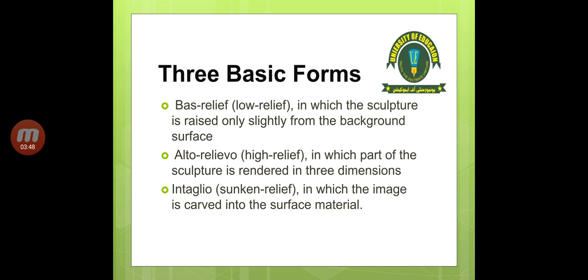Basically, the three basic forms of sculpture are bas-relief, alto-relief, and intaglio. Bas-relief is where the sculpture slightly rises from the background surface — it is attached to the background surface but rises a little. Alto-relief is one in which part of the sculpture is rendered in three dimensions; it enhances much more and gives almost a three-dimensional look.